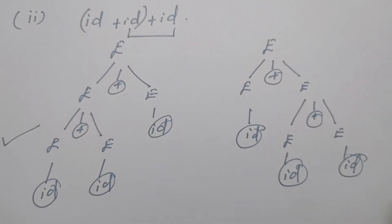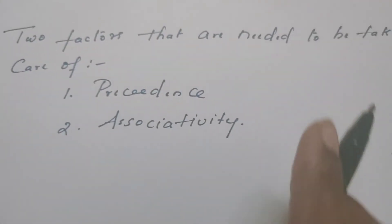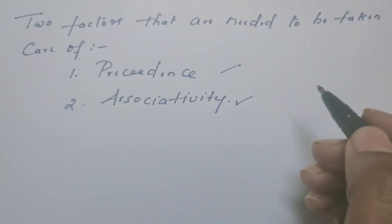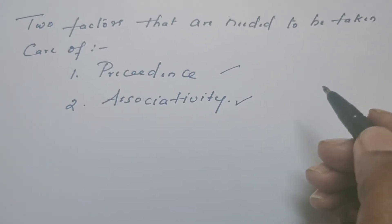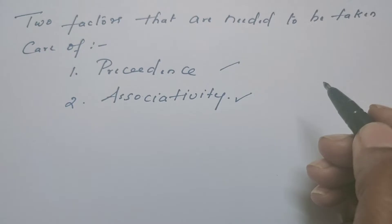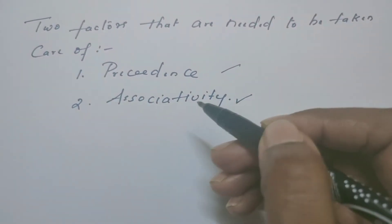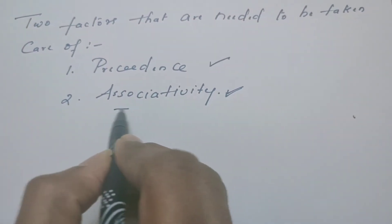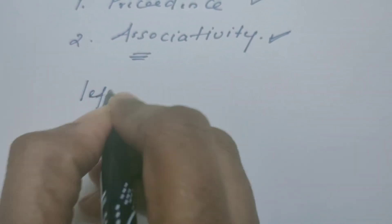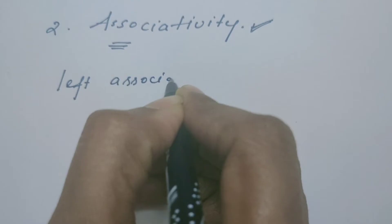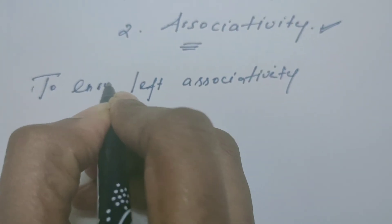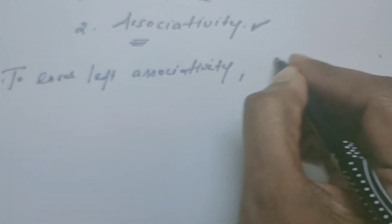Now we need to take care of two things to remove the ambiguity from this context-free grammar: one is precedence and another one is associativity. To eliminate ambiguity from the grammar, for every grammar it is a unique method. According to the meaning of the grammar, we need to frame the steps carefully to remove the ambiguity. For this expression grammar, we have to take care of these factors to eliminate the ambiguity. First, we think of associativity. To ensure left associativity, we need to convert the grammar into left recursive.